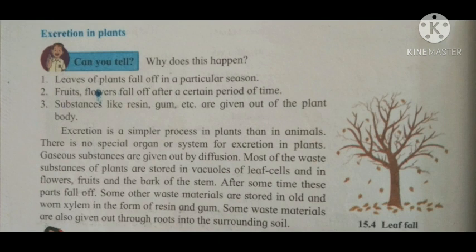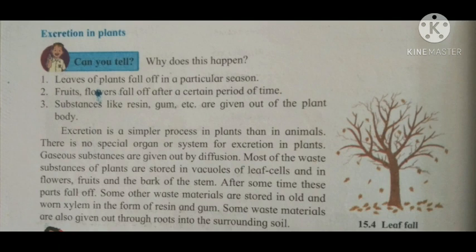Excretion is a simpler process in plants than in animals. There are no special organs or system for excretion in plants. Plants are stable in one place and their movement is also very less compared to animals. Therefore, energy requirement is also less, making excretion a very simple process.